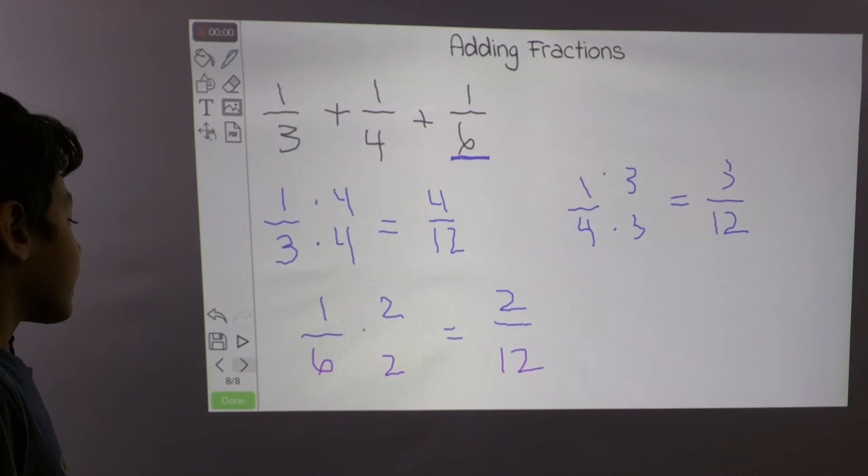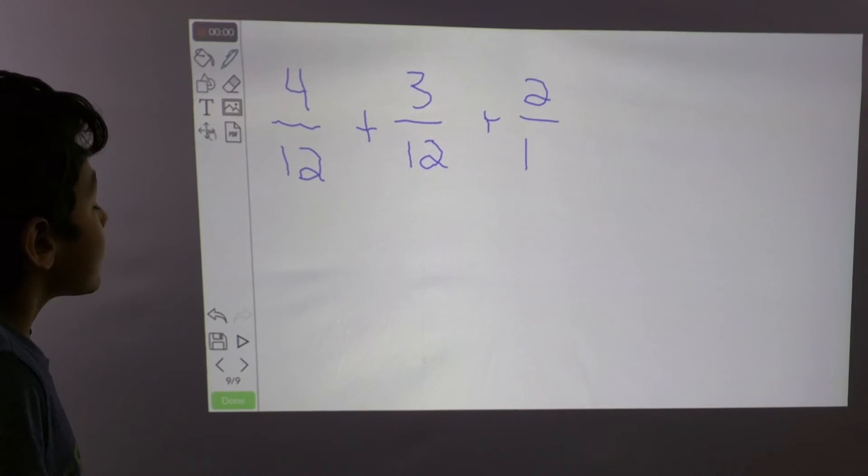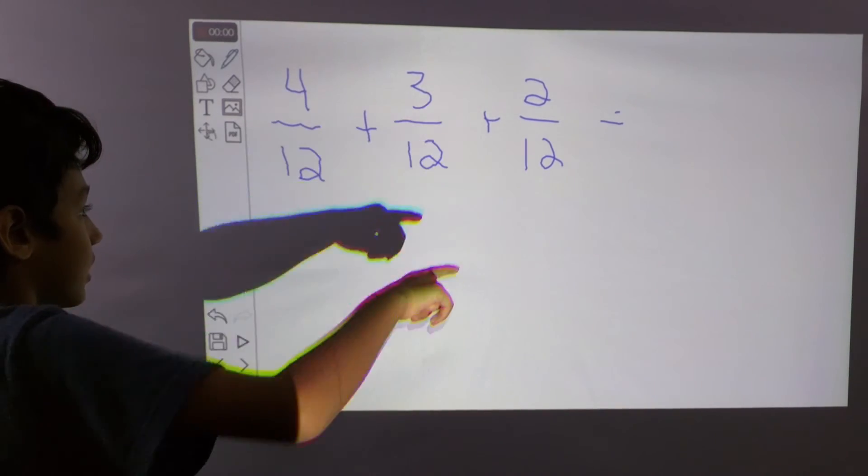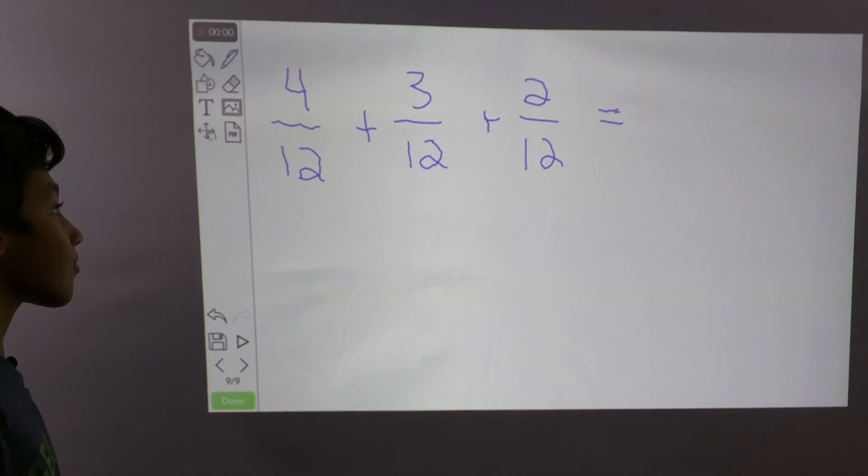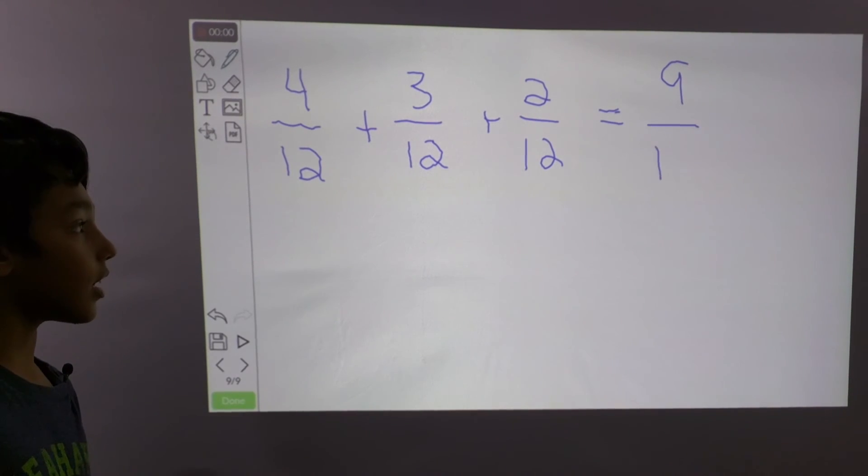So now we can add these. So we have 4 over 12, and 3 over 12, and 2 over 12. So let's add the numerators, since the denominators are the same. So 4 plus 3 is 7, and 7 plus 2 is 9. So we have 9 over 12.